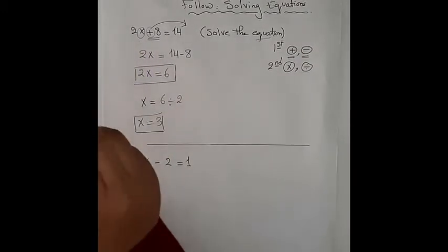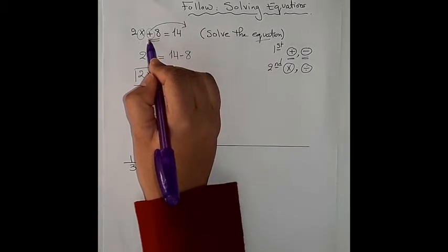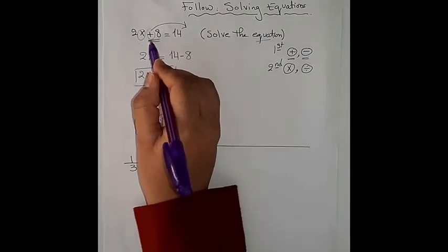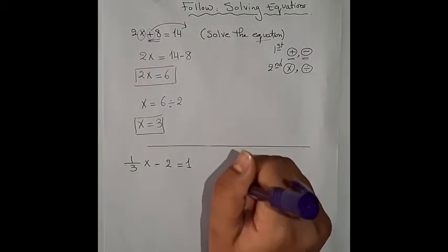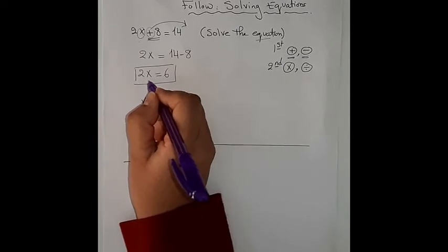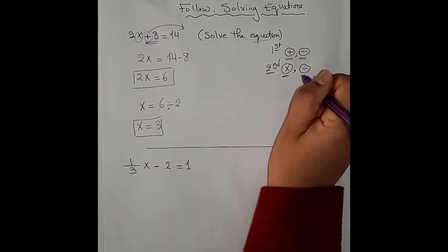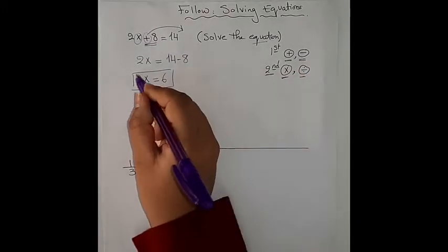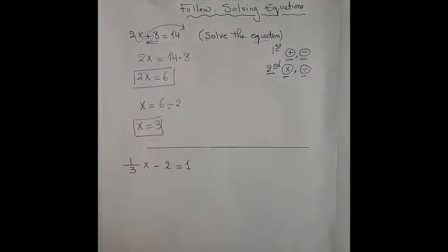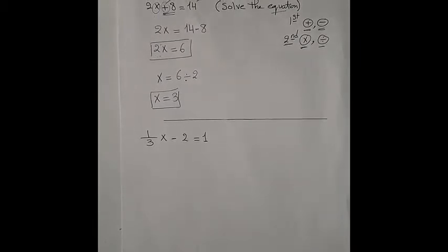So again, what we do to get the value of x: we move away its neighbor, which is 8. The sign of 8 is plus, so we start with addition or subtraction — here we have addition, so we move 8 to the next side with inverse operation minus. Next step: we have 2 multiplied by x, so the inverse operation is division, and we get x equals 3. The next example: ⅓x minus 2 equals 1.